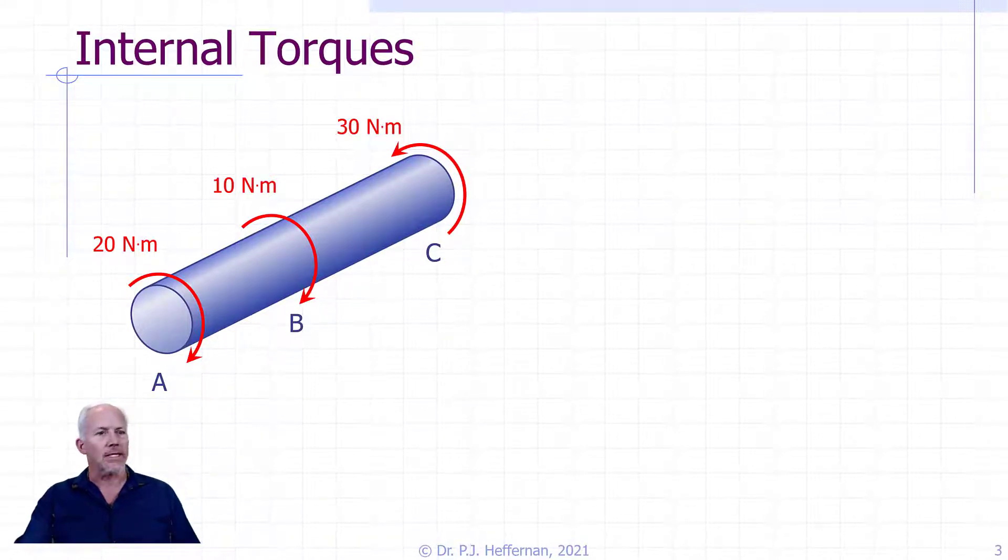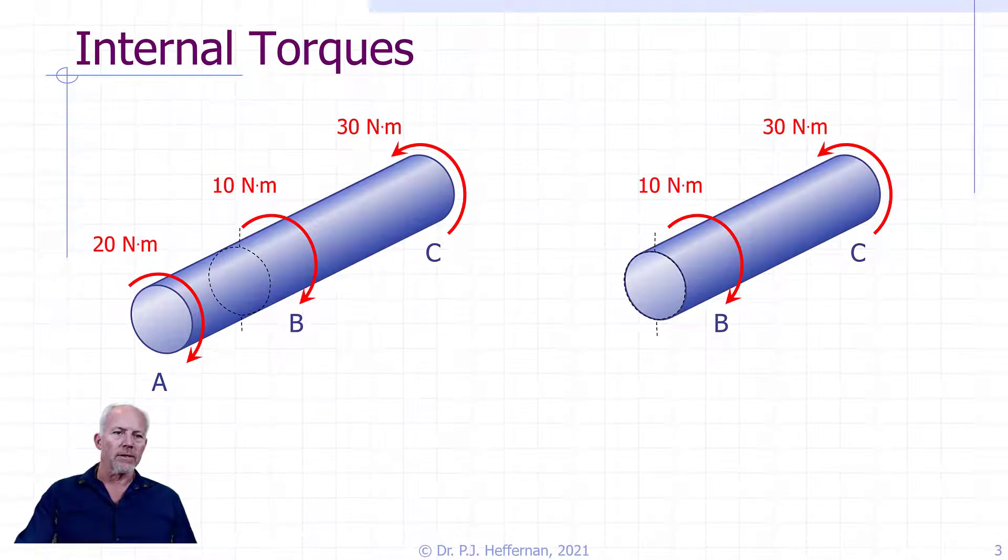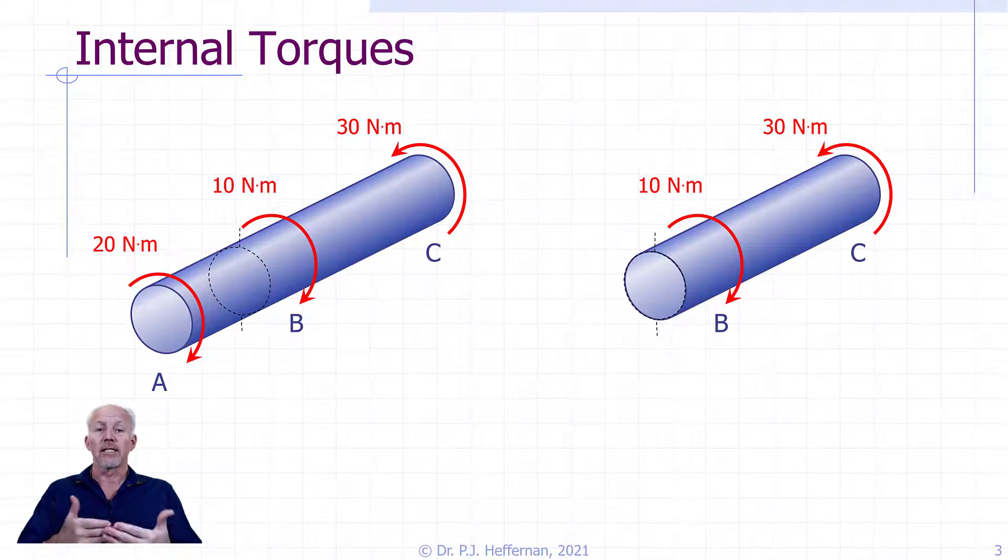We will do exactly the same thing. We're going to do our free body diagram, do a method of sections, throw away part of the structure, and look at what internal forces, in this case internal torque, is required to maintain equilibrium.